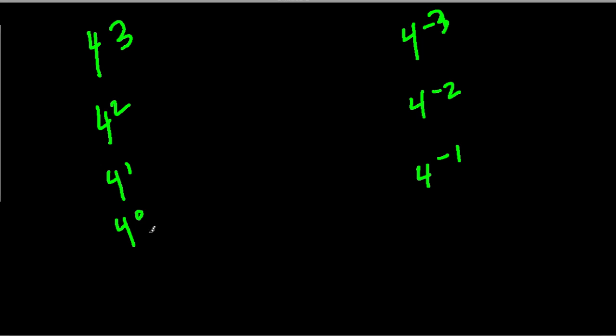So 4 to the 0 we know is 1. 4 to the 1 is 1 times 4, and that's 4. 4 to the negative 1 is 1 divided by 4, and that's 1 4th.